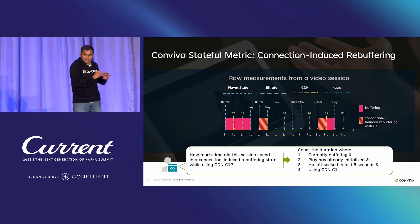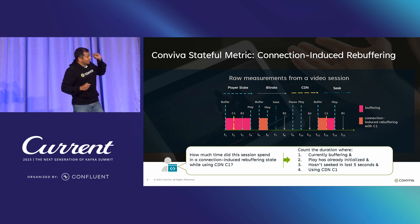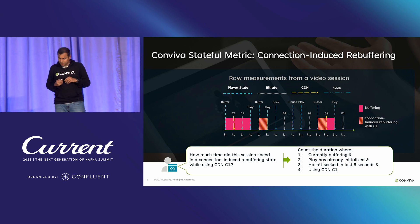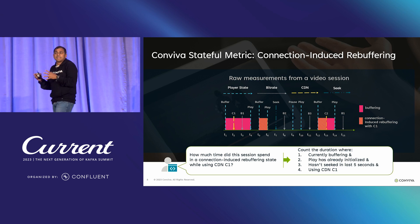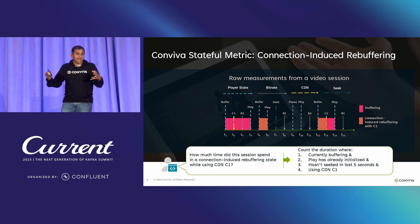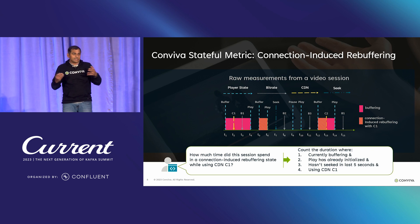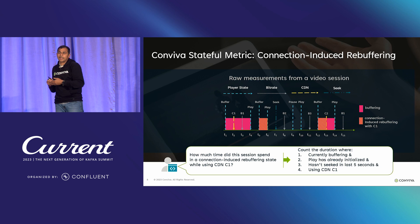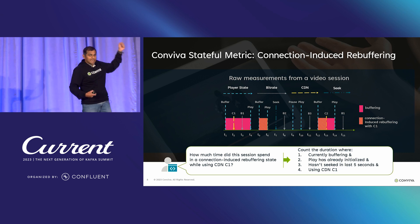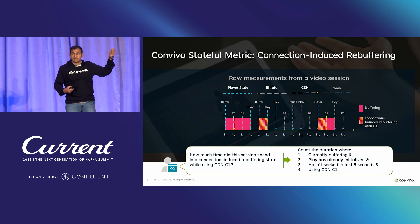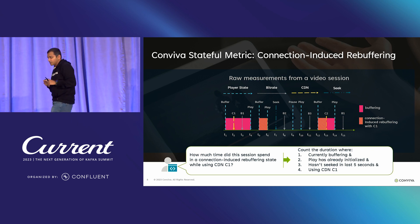This is a highly simplified view — the actual metric is much more complicated. To measure connection-induced rebuffering, I want to measure the duration of buffering where the player is initialized, discounting buffering during initialization, and where the user has not seeked in the last five seconds. Our customers define this policy logic. If CDN C1 is having performance issues, they might switch the client to a different CDN. It's a stateful metric where I must carefully model the sequence of events, user actions, inter-arrival times, and player history.